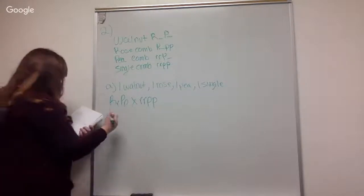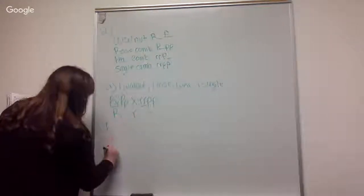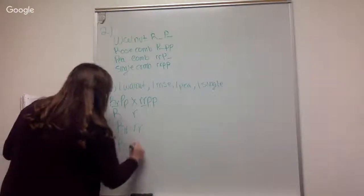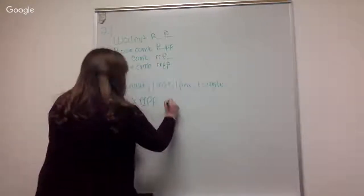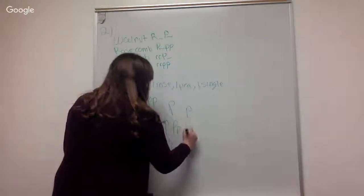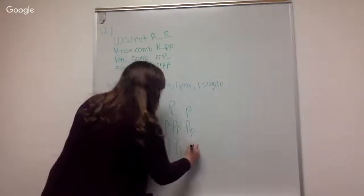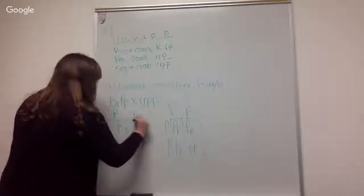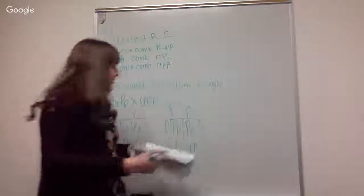So if you do Punnett squares for these, got the R bar and the two recessive rs, you get that. And then if you do the Punnett squares for the P's...